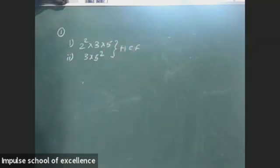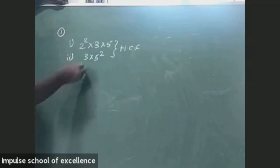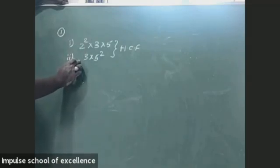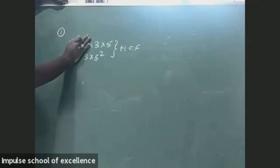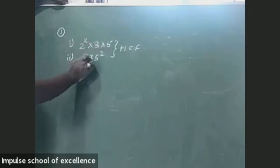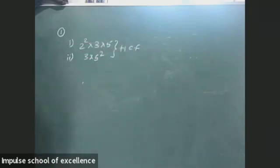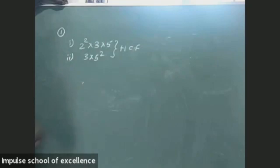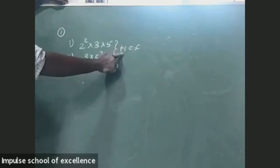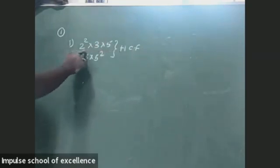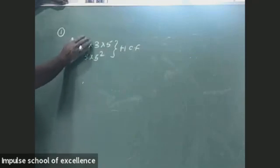So how to calculate HCF? To calculate HCF, first we need to observe these two problems by observing the least power. For 2, it does not appear in both, so we should neglect the 2. We have to choose from 2² × 3 × 5 and 3 × 5². We can now calculate HCF. If you calculate HCF, you have to observe — we have 2 squares in both.